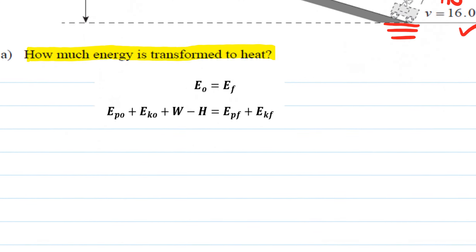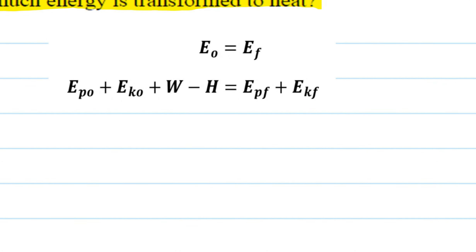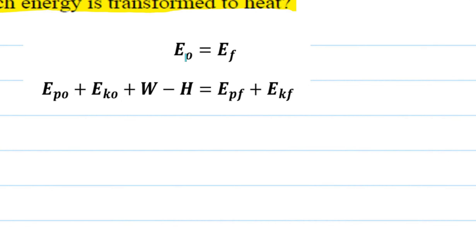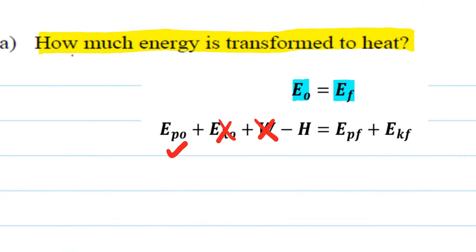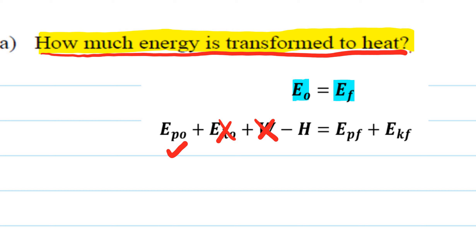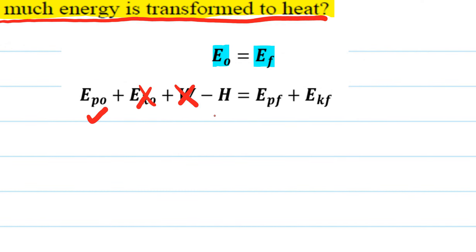Applying the work-energy theorem — energy is conserved, energy at the beginning equals energy at the end — we have potential energy at the start but no kinetic energy (starts from rest) and no work term. The question asks for the heat energy, so we need to include that term in our equation.